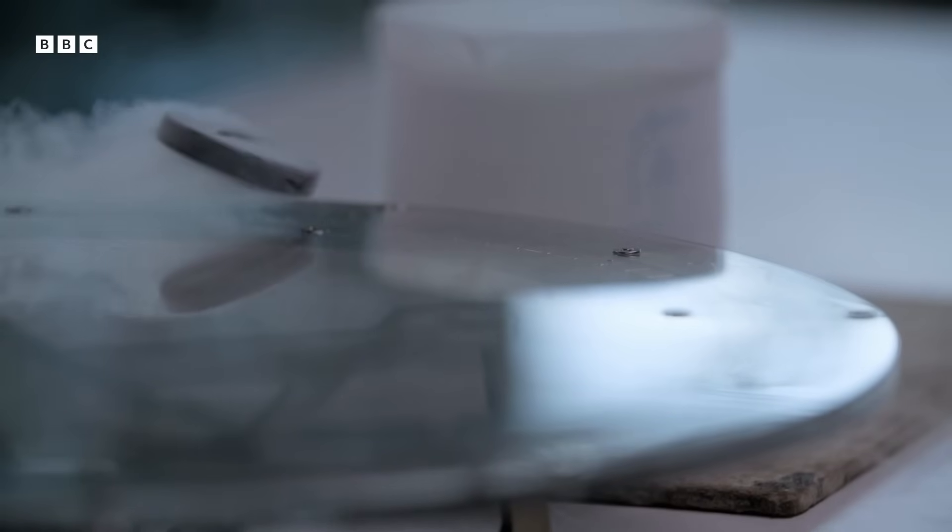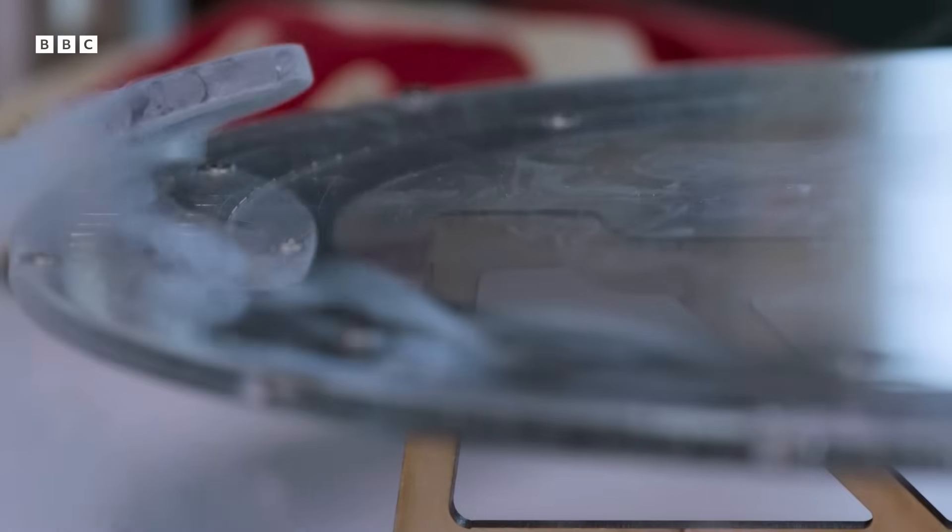So when I bring the disk close to the magnetic track a strong electric current begins to flow in the disk. This in turn generates its own magnetic field. The magnets in the track and the disk repel each other and so the disk levitates.